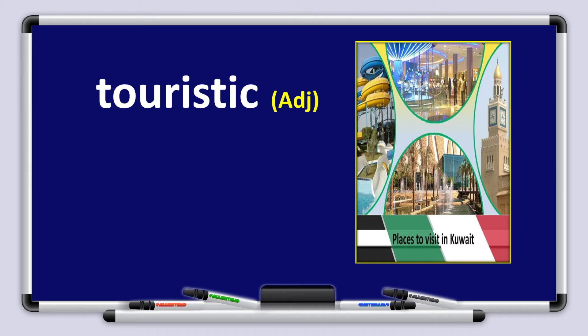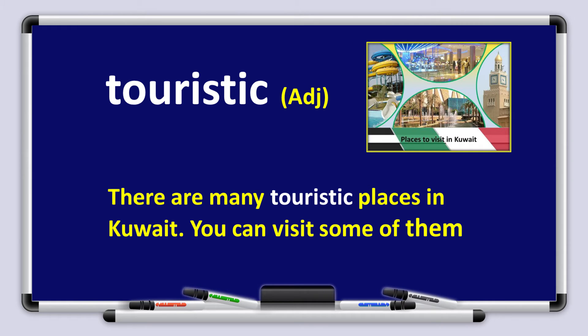Next one. Touristic. Touristic, it's an adjective. It describes a place. Very good. There are many touristic places in Kuwait. You can visit some of them. Excellent. Very good boys and girls. Say it one more time. Touristic. And remember, touristic is an adjective. Now, think of other examples to use touristic in a sentence.